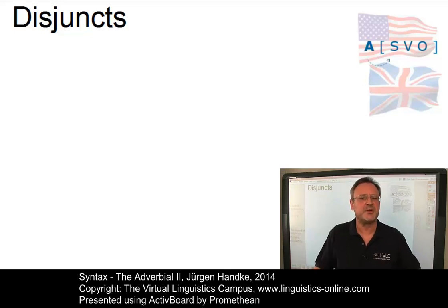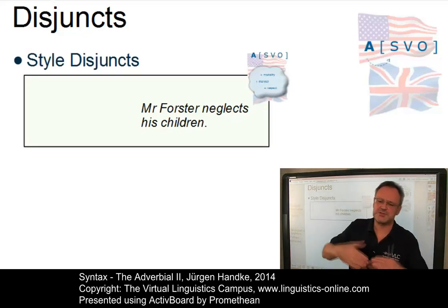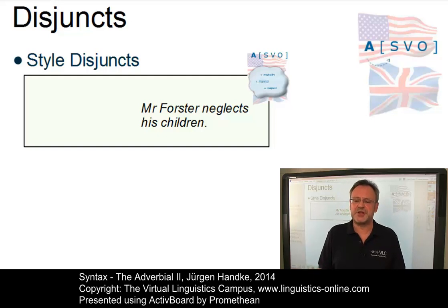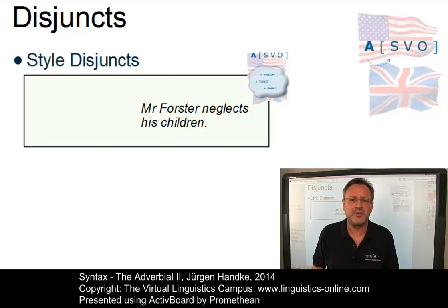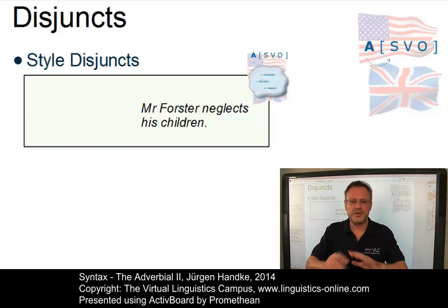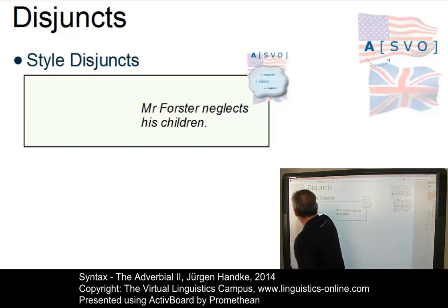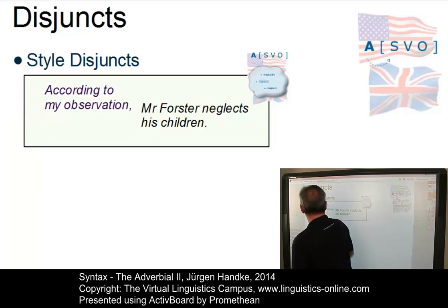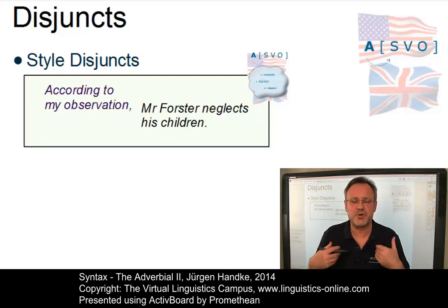Two different types of disjuncts with several subtypes can be defined. The first is the so-called style disjuncts. The class of style disjuncts is relatively small. In some ways, style disjuncts define the conditions under which authority is being assumed for a statement. Furthermore, style disjuncts convey the speaker's comment on the style and form of what is being said. In the sentence 'Mr. Forster neglects his children', we are confronted with an unsupported fact, but with the style disjunct 'according to my observation' we can support this fact.